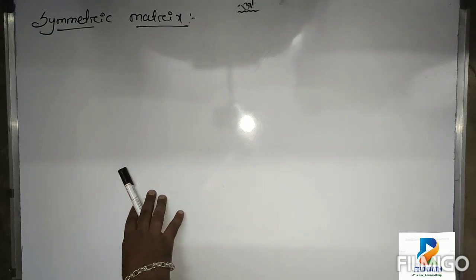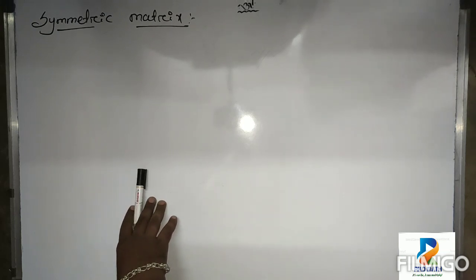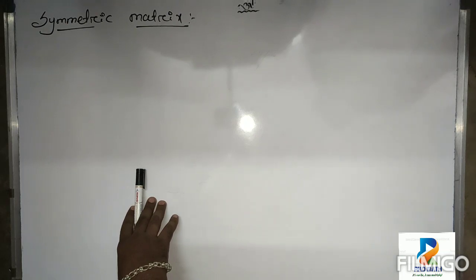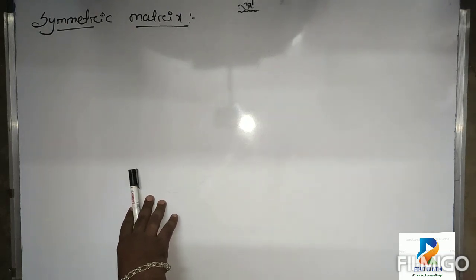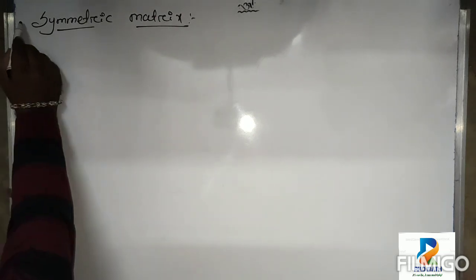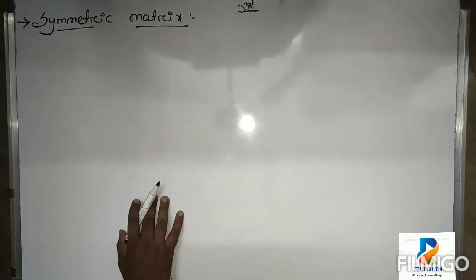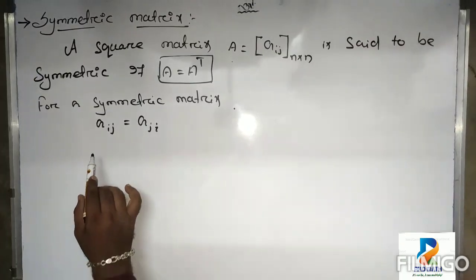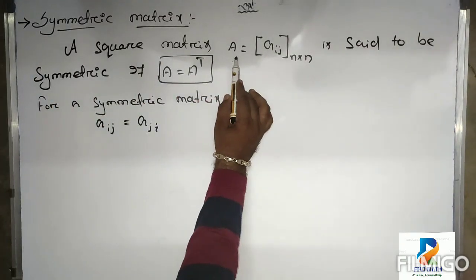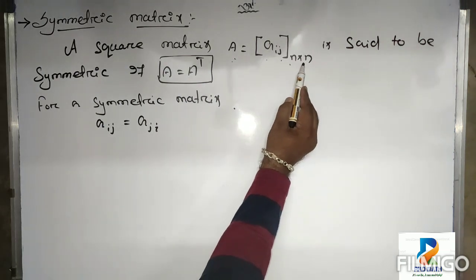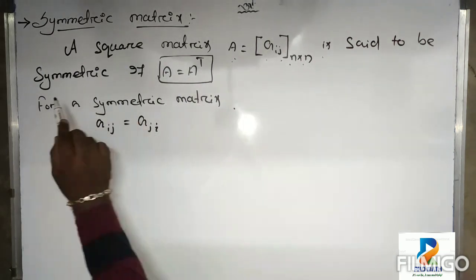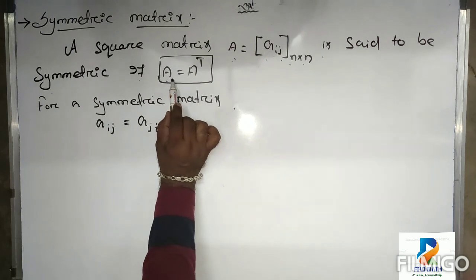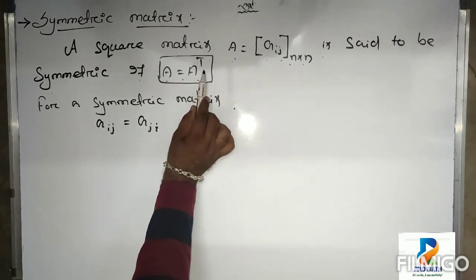Good morning students. In this video we are going to discuss symmetric matrix and skew symmetric matrix. The first one is symmetric matrix. A square matrix A = [aij] of order n×n is said to be symmetric if A equals A transpose.